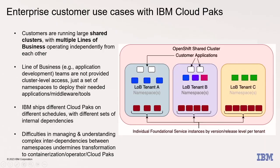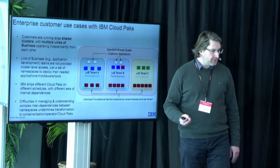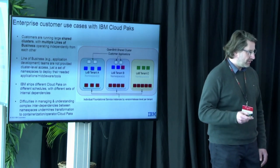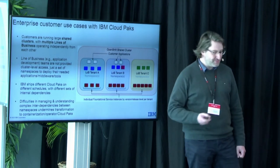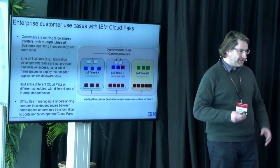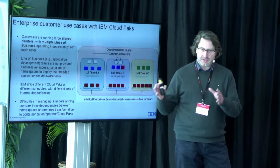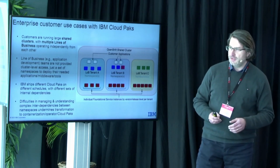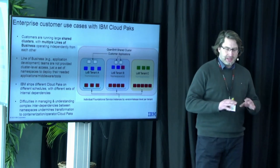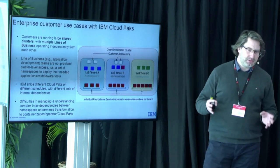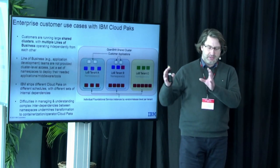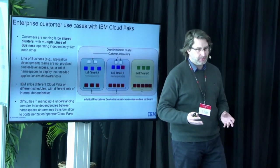In earlier talks today, you saw numbers — presenters running really large clusters. Not five-node clusters, but like 96 nodes. IBM customers are running even larger — thousands of nodes. And believe it or not, they are not running only IBM software there. They are running other software as well. They are partitioning their clusters into isolated areas managed by individual lines of business. Cluster admins want to make sure that clusters remain stable, secure, reliable, and operational, while individual lines of business manage their own set of namespaces.